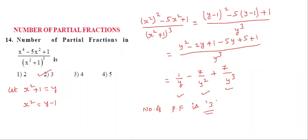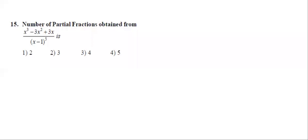Students, all of you understood. No need to substitute back x square plus 1 for y, because they are asking only the number of partial fractions. See the 15th question — same model. Number of partial fractions obtained from (x³ - 3x² + 3x) divided by (x-1)⁵. Here, let x minus 1 equal to y. Then x equals y plus 1.